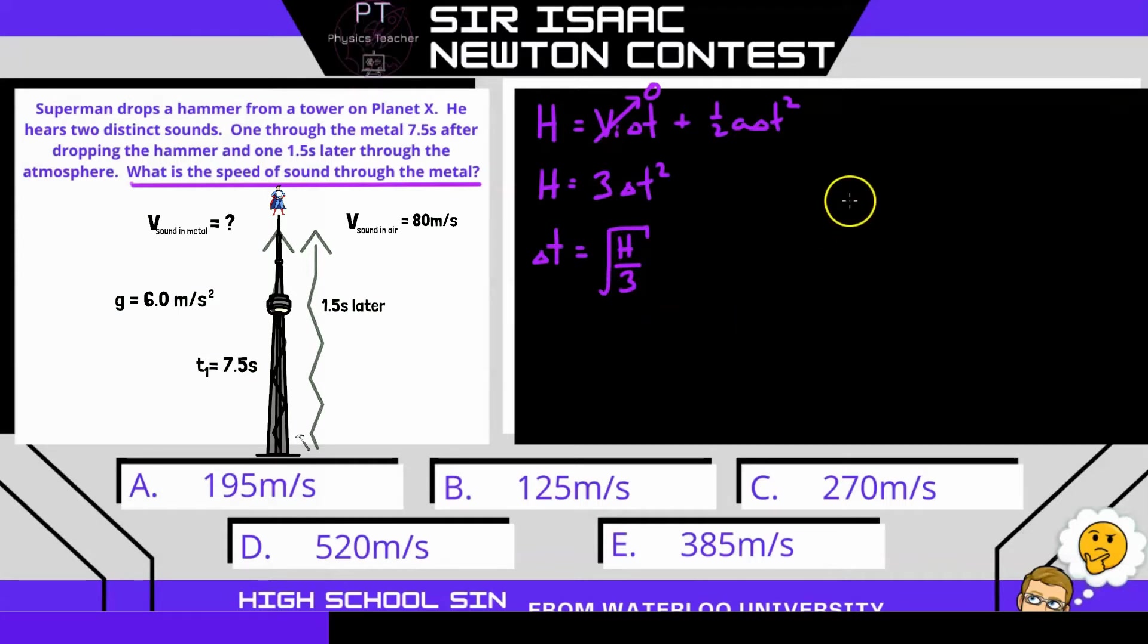Now, let's focus on the first sound through the metal. It takes a total of 7.5 seconds after dropping it to hear that sound. So during that 7.5 seconds, first, we have the time it takes for the hammer to fall. So we have this square root of h over 3, and then we also have the time it takes for the sound to travel through the metal a distance of h, at a speed of v. Let's call that v the speed through the metal. And this equation for time is just our distance over speed. Let's call this equation 1.